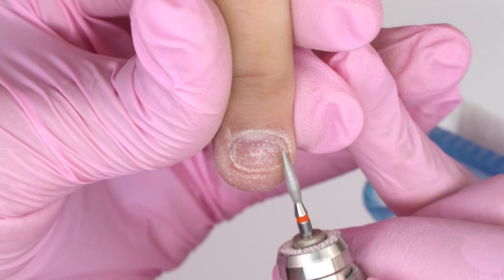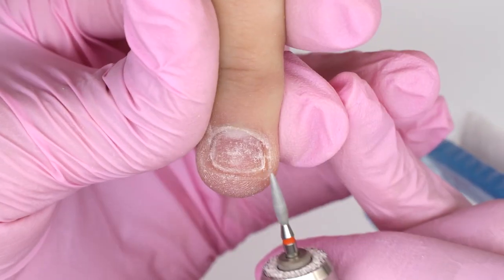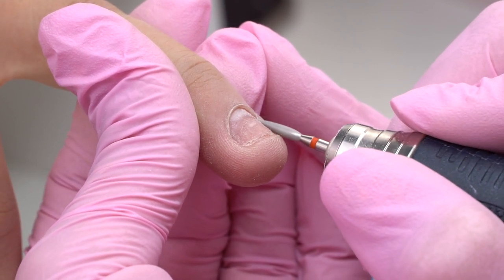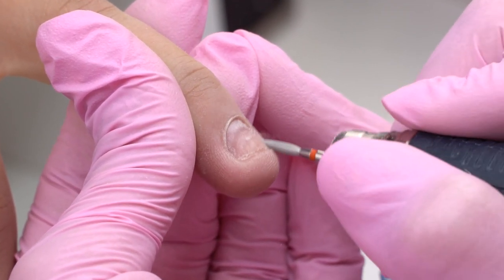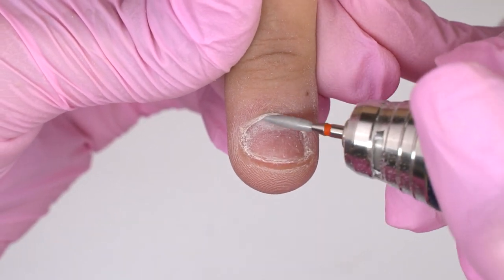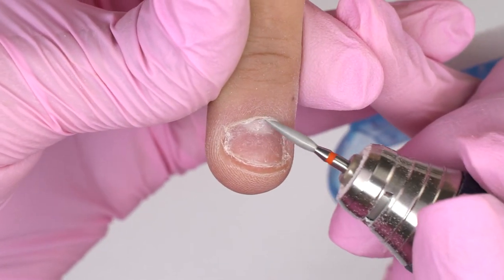Once we have processed all the left sides, switch to the reverse and process the right ones. It is not that easy to process such cuticles, especially if you are a beginner. It takes time and lots of practice to master this technique and avoid injuring the skin.